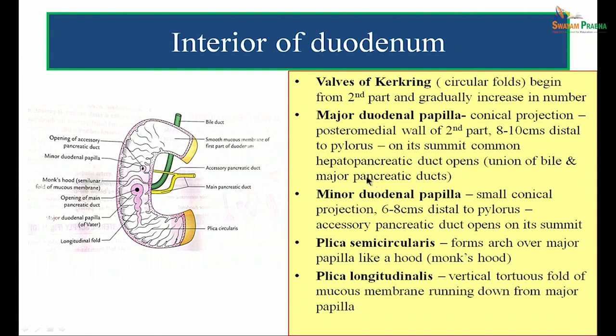Plica semicircularis is a semicircular mucosal arch seen over the major duodenal papilla, looking like the hood of a monk — hence it is known as monk's hood. Plica longitudinalis is a vertical tortuous mucosal fold running downwards from the major duodenal papilla. So the internal features of the duodenum are: valves of Kirchring, major duodenal papilla, minor duodenal papilla, plica semicircularis, and plica longitudinalis.